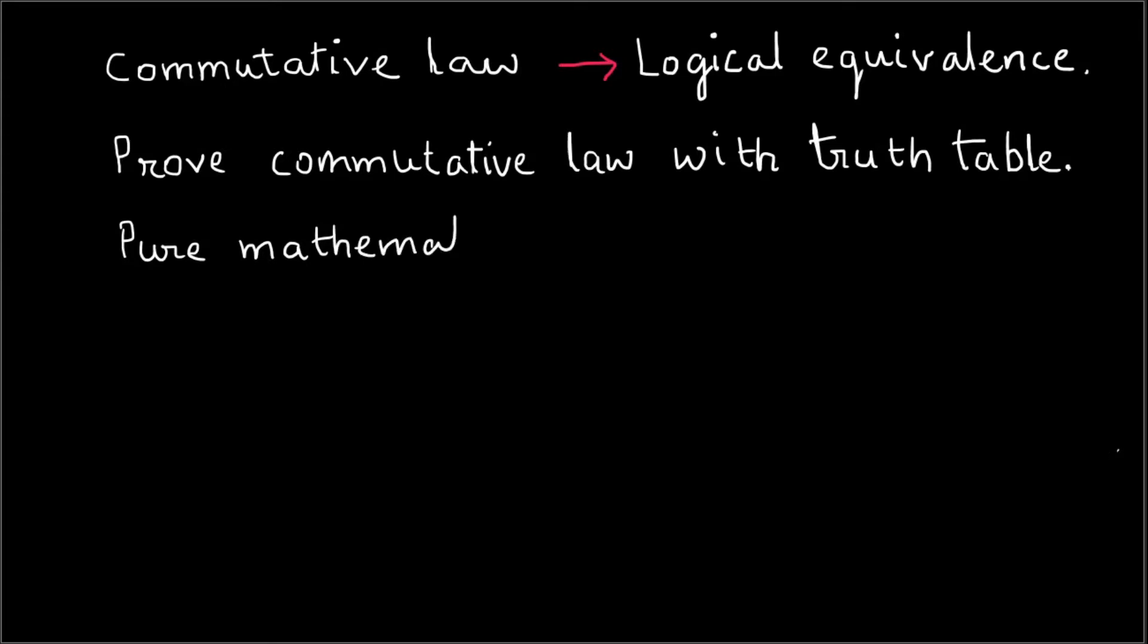Commutative law is part of pure mathematics or Boolean algebra. It is one of the properties associated with basic arithmetic operators like addition or multiplication.